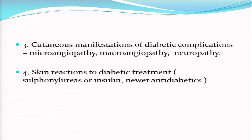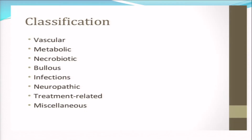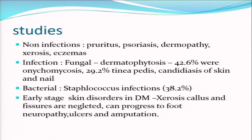Other categories include cutaneous manifestations of diabetic complications like microangiopathy, macroangiopathy, and neuropathy, very commonly seen in extremities; skin reactions to diabetic treatments such as sulfonylureas and insulin - insulin-induced lipodystrophy we used to see but hardly see nowadays. The newer antidiabetics may have skin side effects we need to recognize. The full classification spans vascular, metabolic, necrobiotic, bullous, infectious, neuropathic, treatment-related, and miscellaneous categories.